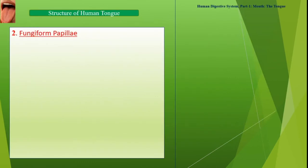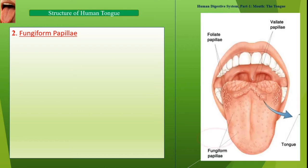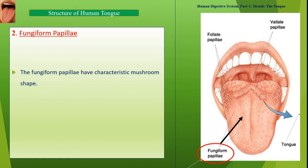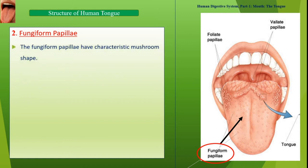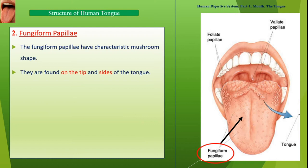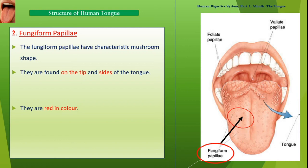Fungiform papillae have a characteristic mushroom shape. They are found on the tip and sides of the tongue and are red in color.